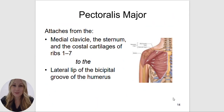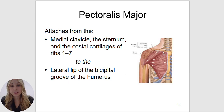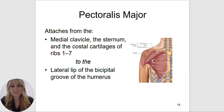The pectoralis major is going to attach to the anterior portion of the body. It attaches from the medial clavicle to the sternum and the costal cartilages of ribs one through seven, to the lateral lip of the bicipital groove of the humerus. It's going to look like a fan shape and it actually twists upon itself when it attaches to the lateral lip.